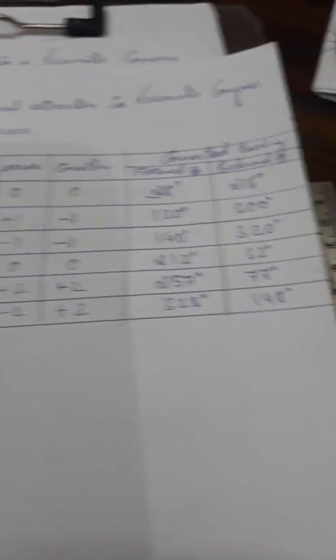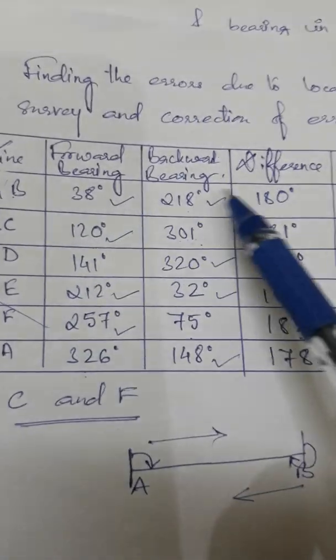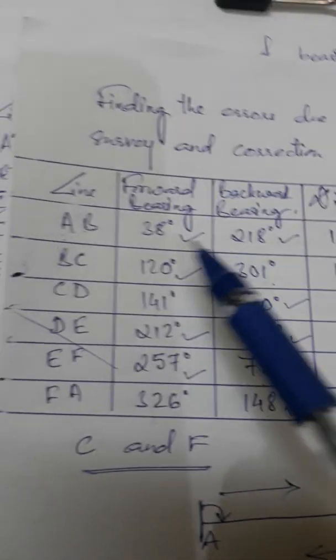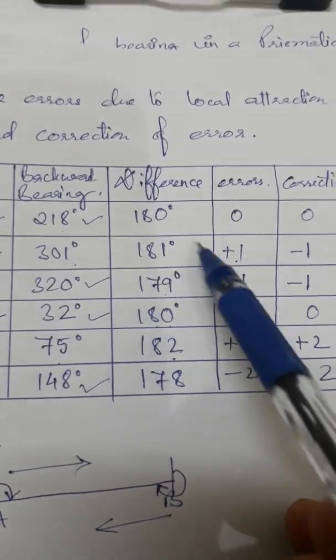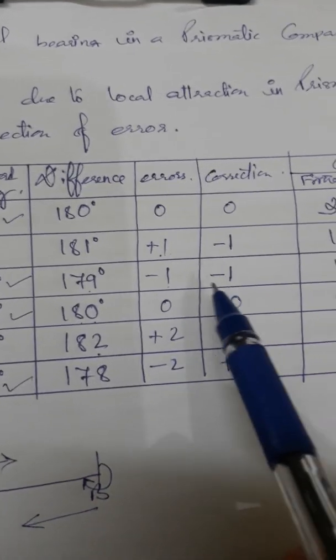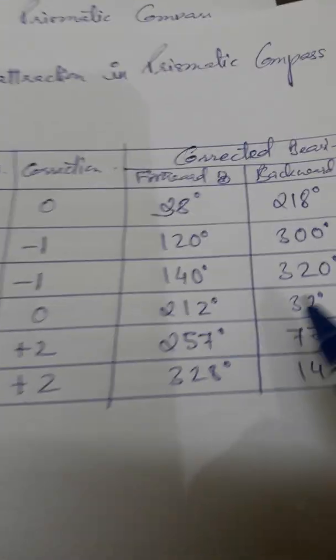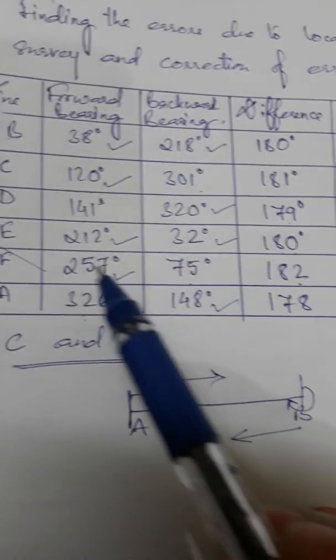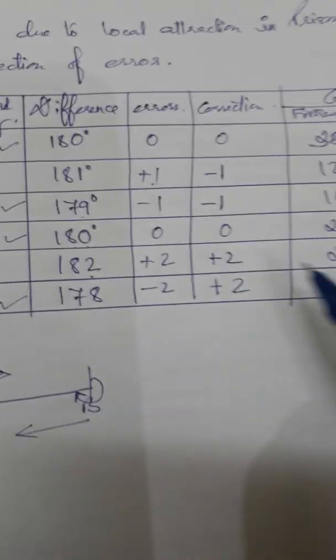After correction we get the corrected bearings. For AB, since both readings were correct, the corrected readings remain the same: 38 and 218. For BC, the forward bearing is already correct so we write it as is, and we reduce 1 from the backward bearing, giving 300. For CD, the correction is minus 1, so we reduce 1 to get 140, and the backward bearing was correct so we plot it as it was. For DE, both readings are correct so we plot them unchanged.